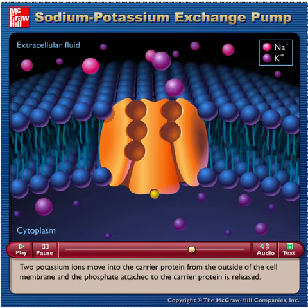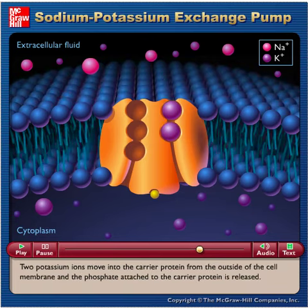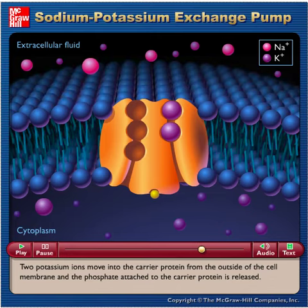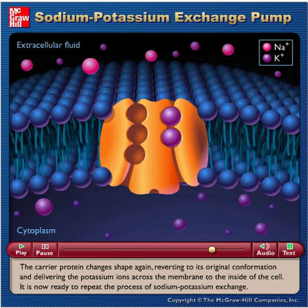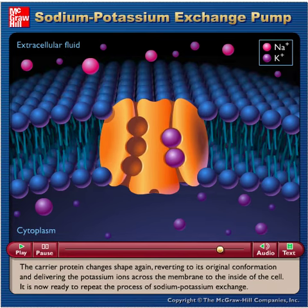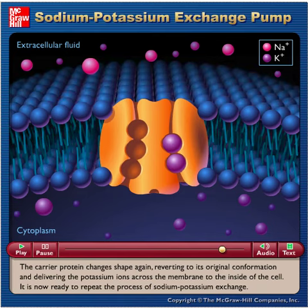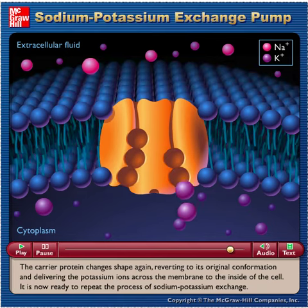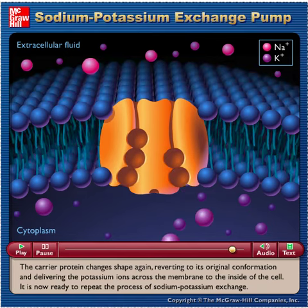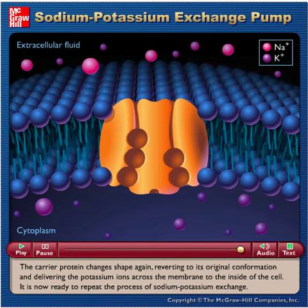Two potassium ions move into the carrier protein from the outside of the cell membrane, and the phosphate attached to the carrier protein is released. The carrier protein changes shape again, reverting to its original conformation and delivering the potassium ions across the membrane to the inside of the cell. It is now ready to repeat the process of sodium-potassium exchange.